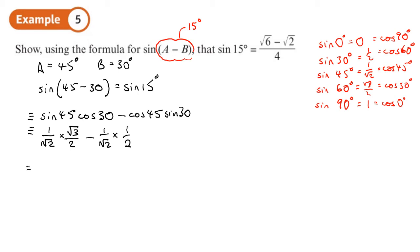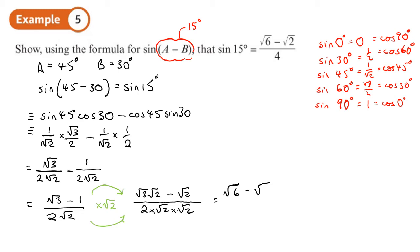If we work that out, I'll get root 3 over 2 root 2 minus 1 over 2 root 2. The denominators are the same, so these can go together to give me root 3 minus 1 over 2 root 2. We're going to times the top and the bottom by root 2. We'll get root 6 minus root 2 over 4. So we've done that one.